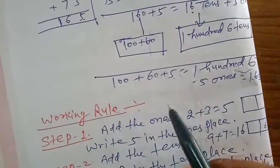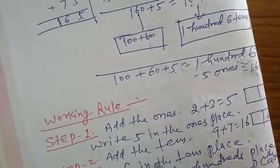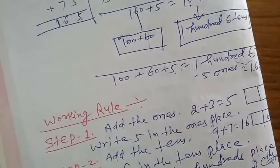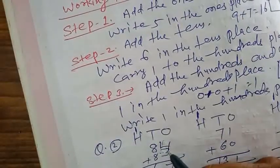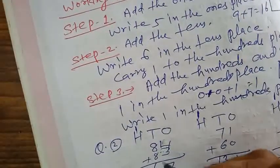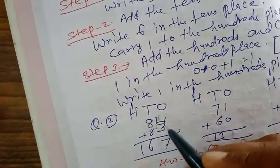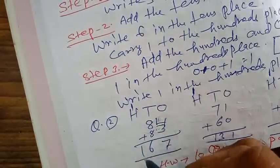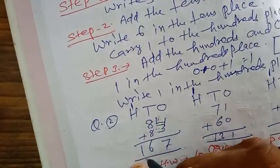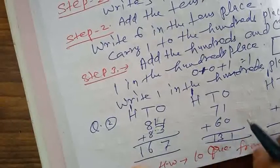Now let's go to the working rule. Question number 2: here we have 84 plus 63. Add 4 plus 3 equals 7. Then 8 plus 6 equals 14, write 4, carry 1. The answer is 147.